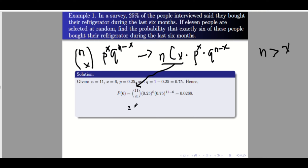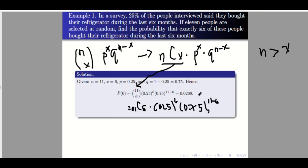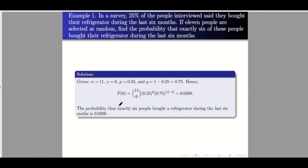On your calculator, input: 11 C 6, times 0.25 raised to 6, times 0.75 raised to (11 minus 6). You will arrive at an answer of 0.0268. So the probability is very small that exactly six of these 11 people bought their refrigerator during the last six months. The probability is 0.0268, which is very small.